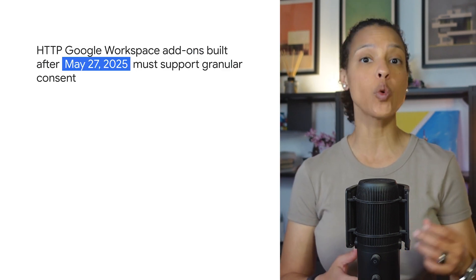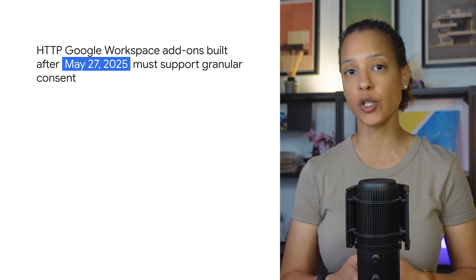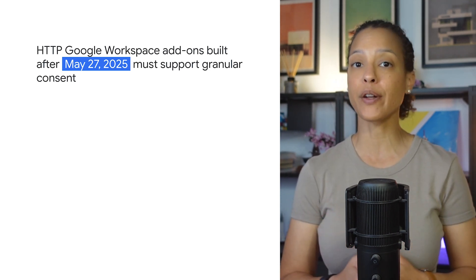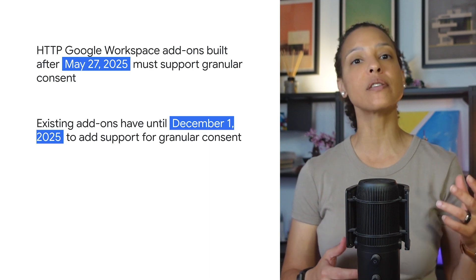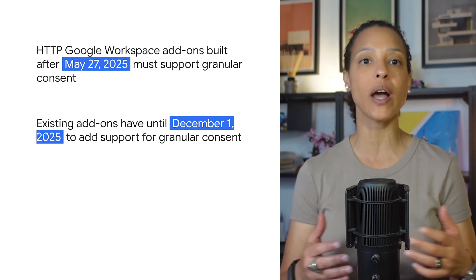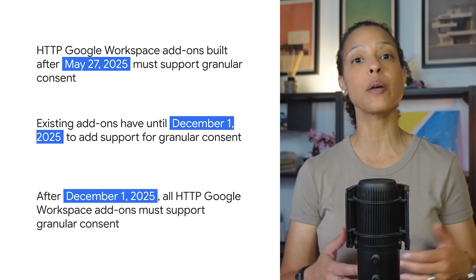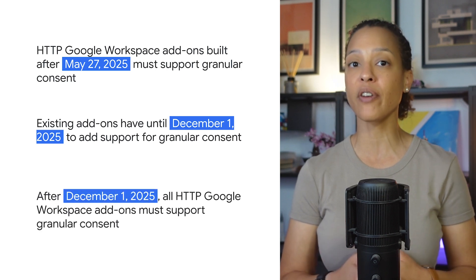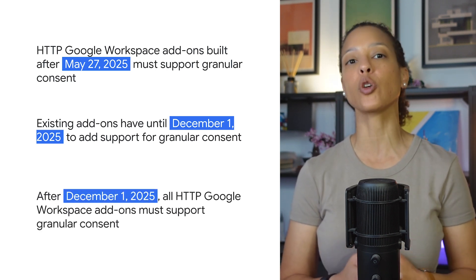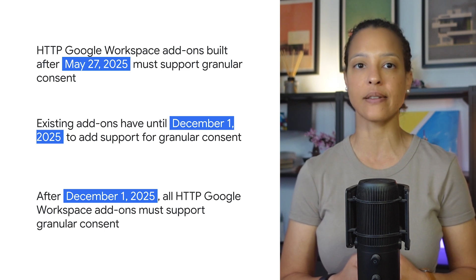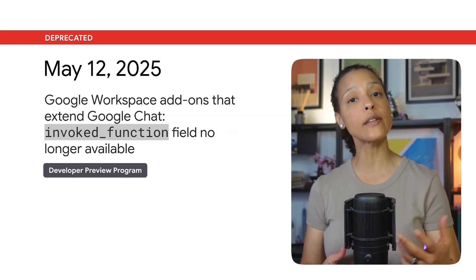HTTP Google Workspace add-ons built after May 27, 2025 must support granular consent. Existing add-ons have until December 1, 2025 to add support for granular consent. After December 1, 2025, all HTTP Google Workspace add-ons must support granular consent.